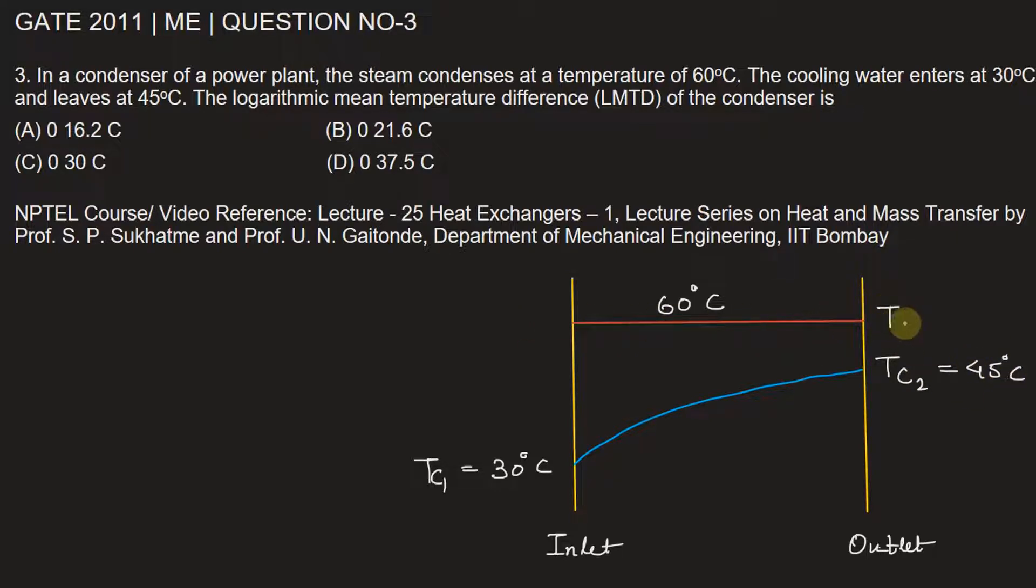The steam is the hotter fluid. Th2 is 60 degrees Celsius and Th1 is also 60 degrees Celsius. This information is available in the problem.